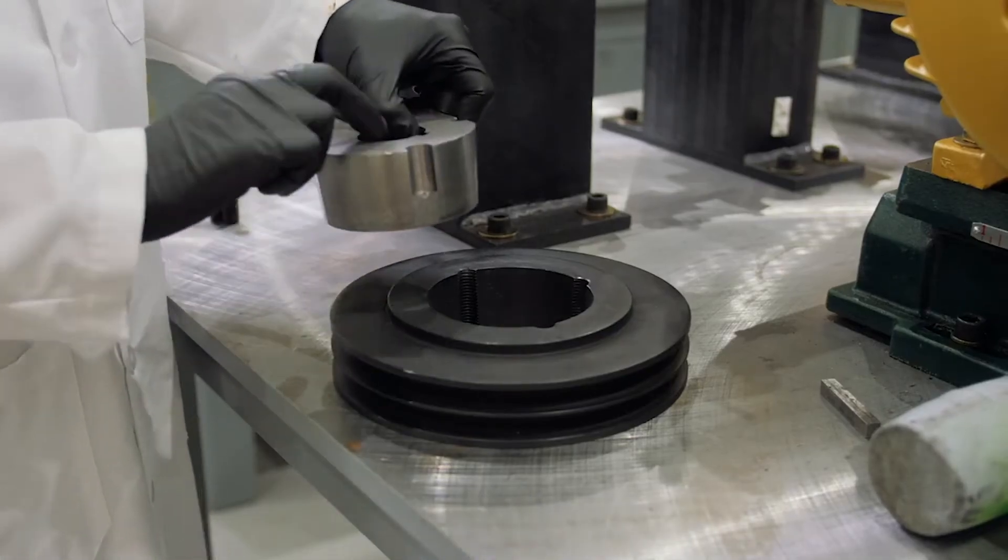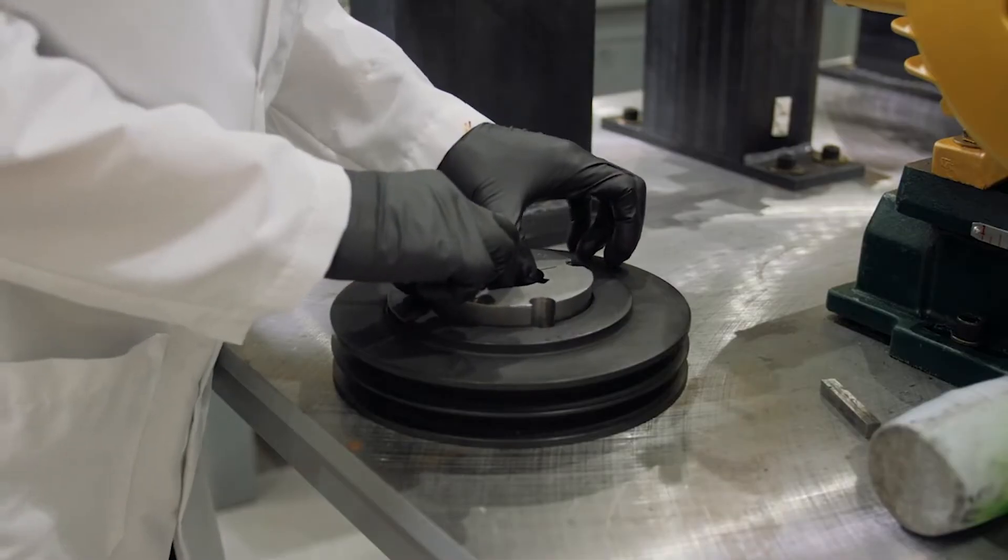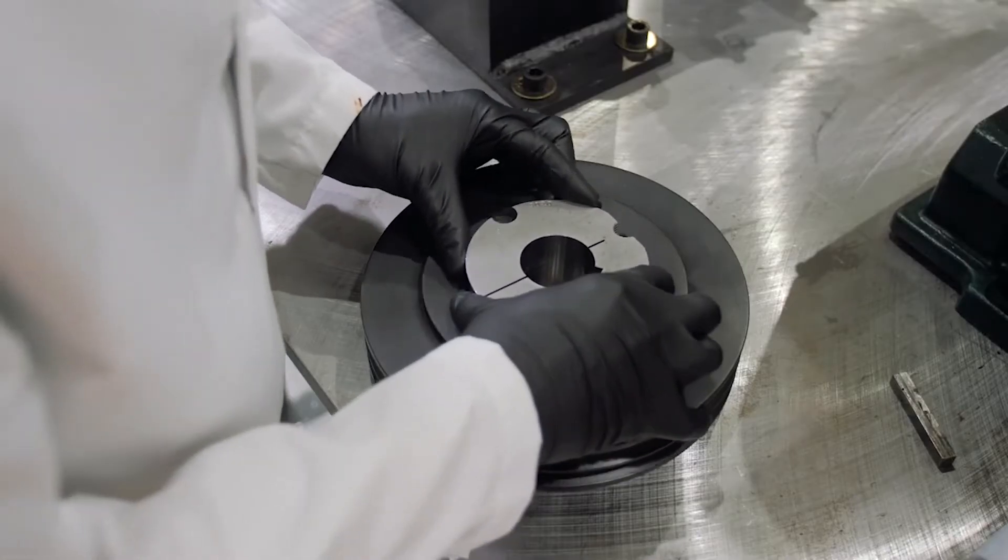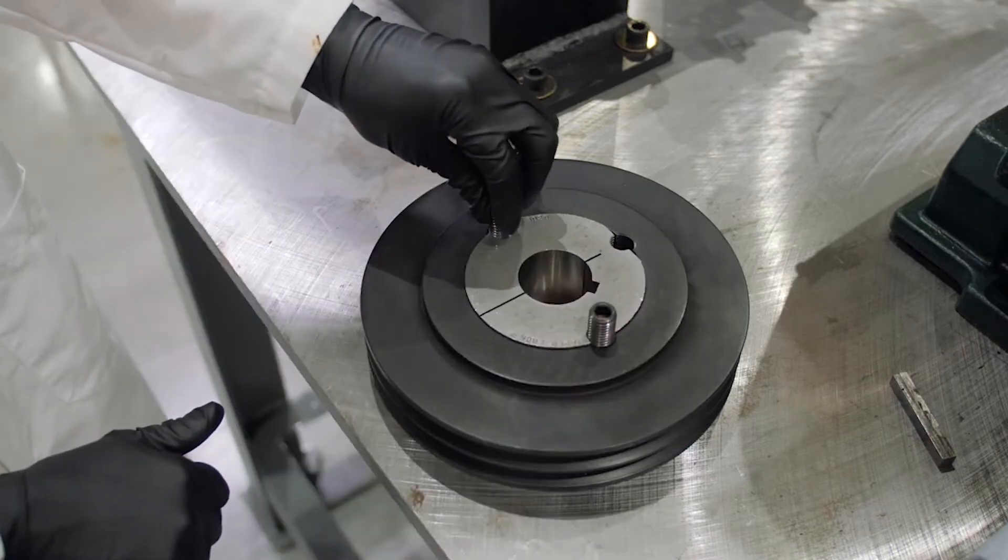Insert the bushing into the hub, aligning all half holes on the hub with the half holes in the bushing. Match the threaded holes with the unthreaded half holes. Loosely install set screws.